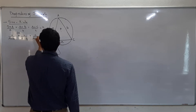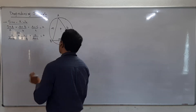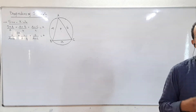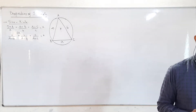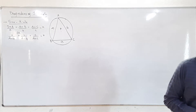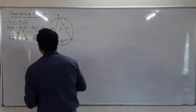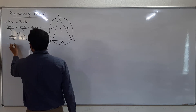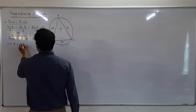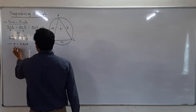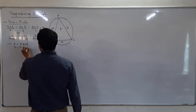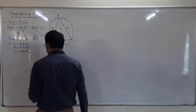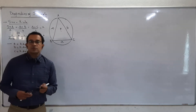The proof of this formula is not included in the syllabus. If I compare every side to k, then we can write: a is equal to k sin A, b is equal to k sin B, and c is equal to k sin C. This is how we apply the formula in the sums.